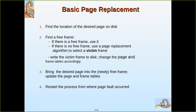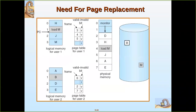If there is no free frame, we have to use a page replacement algorithm to select a victim frame. For example, this is the user memory - page one is loaded in the fourth frame. But there occurs a statement to load another page, and that particular page is not in the main memory. Now it has to be loaded into the main memory.